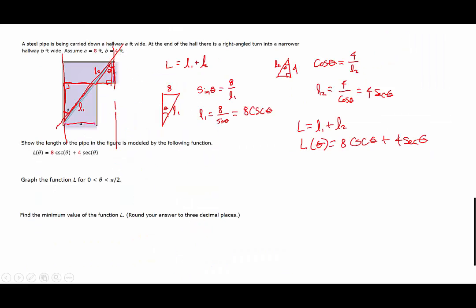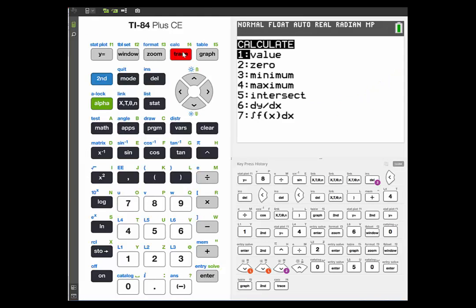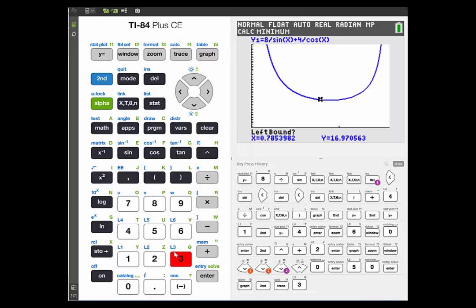Now let's find the minimum value of the function L. So we'll press second calc. And we want to find the minimum. So we'll press 3. Now we're going to set some bounds. See it says left bound.